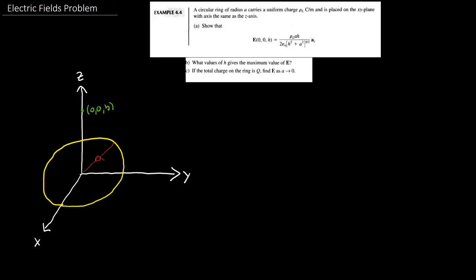We know that rho L is going to equal DQ over DL. So therefore, DQ is going to equal rho L times DL, and therefore the Q is going to equal the integral of rho L DL. I'm just writing stuff because I'm still not 100% sure what I'm going to do about this.